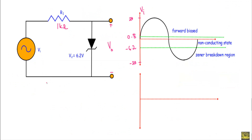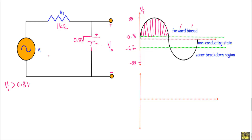When Vi is greater than 0.8V, the zener diode will be in forward bias. In that case we can replace the zener diode with its constant voltage drop model — a voltage source of 0.8V connected between the output terminals. Therefore, our output Vo will be fixed at 0.8V as long as Vi is greater than 0.8V.